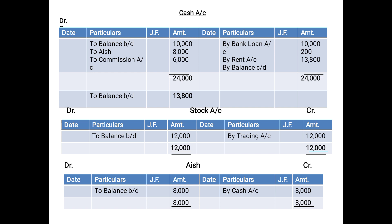For the Stock Account — which is related to goods — the debit side was 12,000 and the credit side was nothing. So the entire amount of 12,000 will be transferred to Trading Account on the credit side as 'By Trading Account 12,000'. Then the Ash Account: no balancing is needed because both sides are automatically equal.